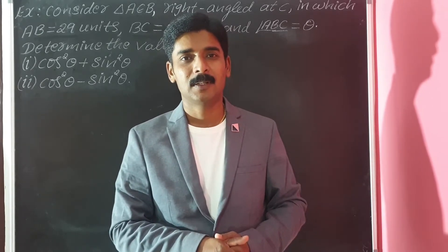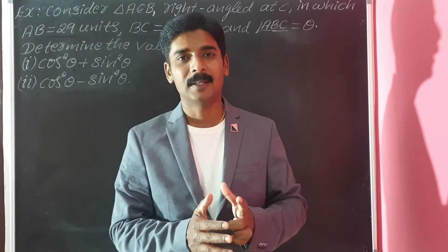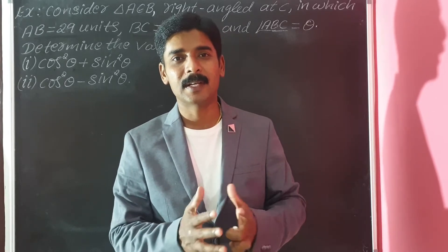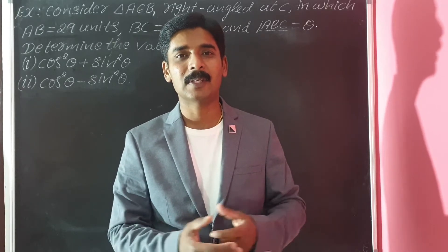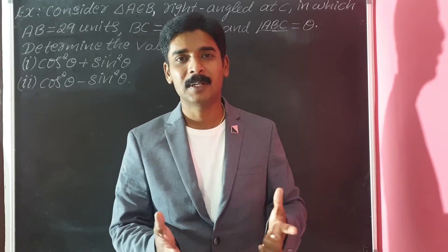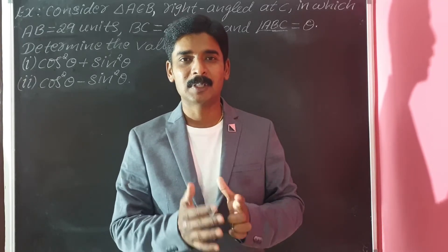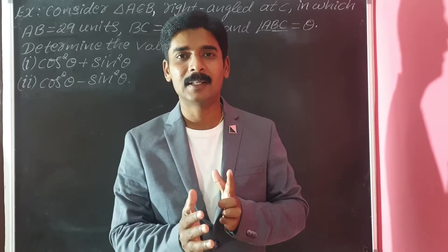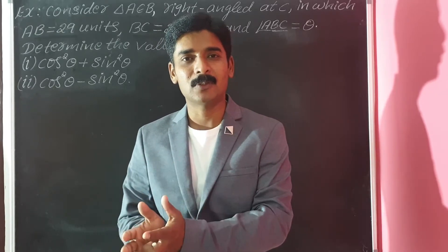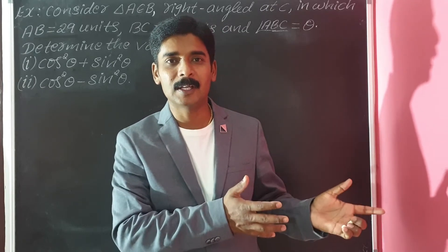Now the second variety of problem: in this variety, the sides of a right angle triangle will be given — either all three sides, or any two sides. If two sides are given, you know how to find the third side using the Pythagoras theorem. You must understand clearly how each type of data leads to a specific method of solving.